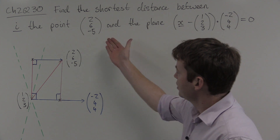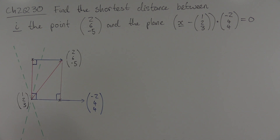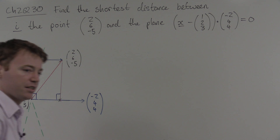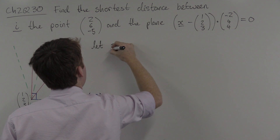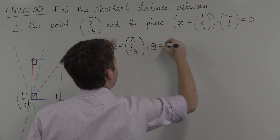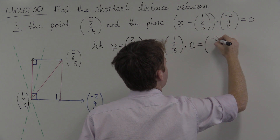The point is (2, 6, -5) and the plane is given in point-normal form. I've drawn the plane over here. If you can imagine an infinite sheet of paper sitting on top of these two green dashed lines, then you are imagining the plane. It goes through the point (1, 2, 3) and is perpendicular to the vector (-2, 4, 4). This is called the normal to the plane. Let us label these: let P, the point, be equal to (2, 6, -5); A, a point on the plane, be equal to (1, 2, 3); and the normal n be equal to (-2, 4, 4).